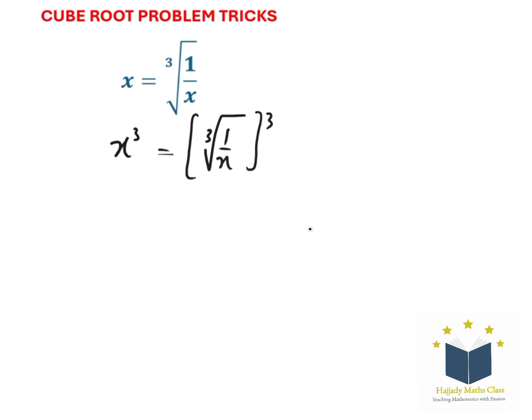Okay, so the purpose is to eliminate this cube root. So on the left hand side, I'm still going to have my x cubed equals, this is going to cancel out this, so I'm having 1 over x.